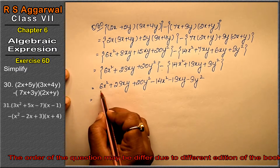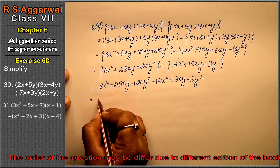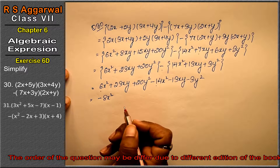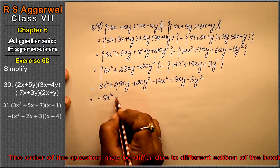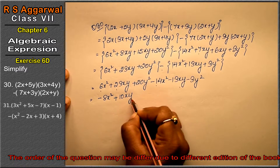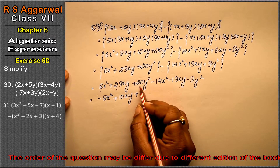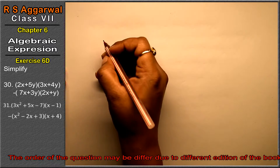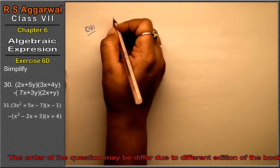6x square is positive, 14x square is negative — opposite signs, so we subtract and the bigger sign applies: 14 minus 6 is 8x square. For xy: 23 minus 13 is 10xy. For y square: 20 minus 3 is 17y square. So the answer is minus 8x square plus 10xy plus 17y square. Now let's do question number 31 of exercise 6D, algebraic expression.